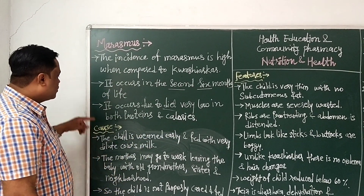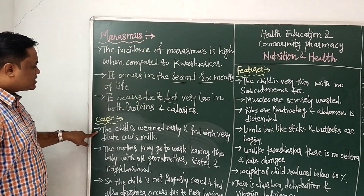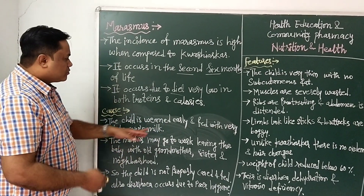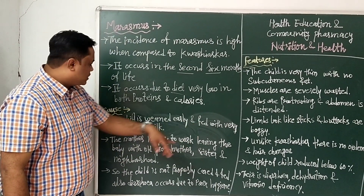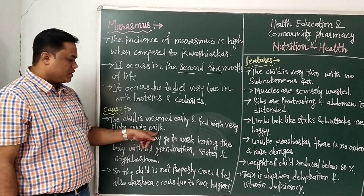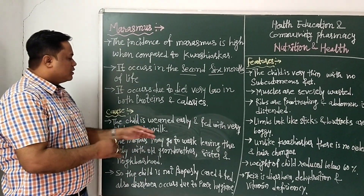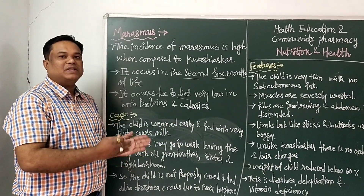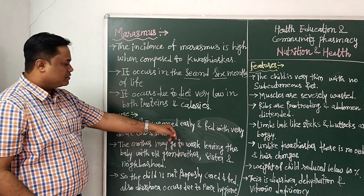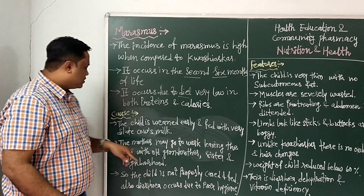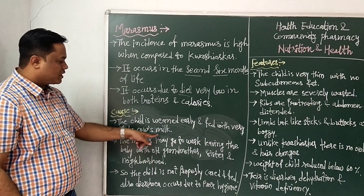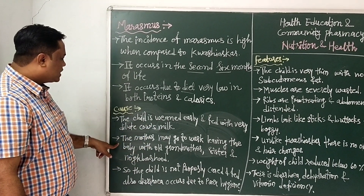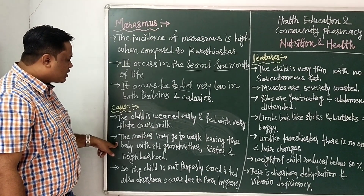The causes of marasmus: the first cause is early weaning, meaning the mother's milk is stopped early and the child is fed with cow's milk directly. This means the mother's milk is discontinued and replaced with other diet, so proper nutrition is not provided to the child.